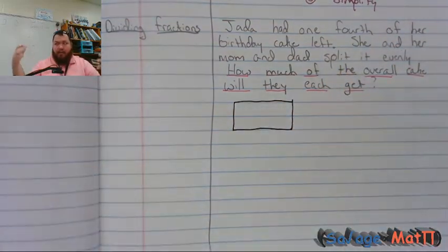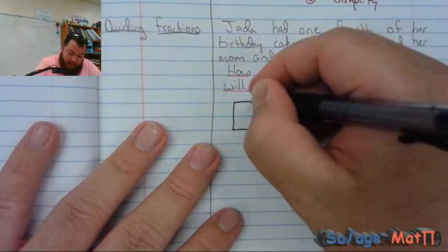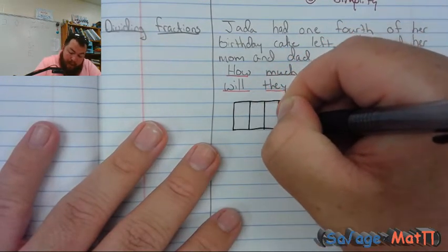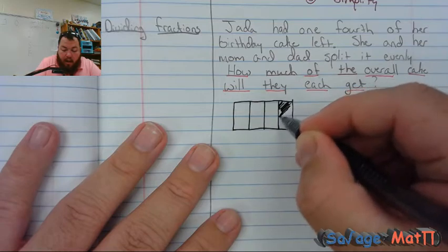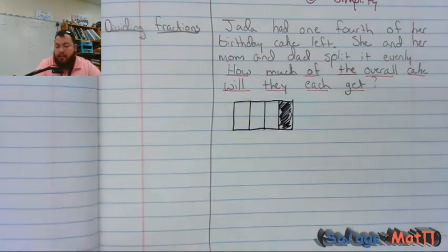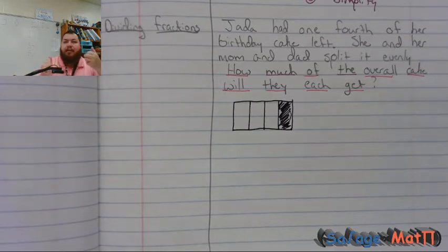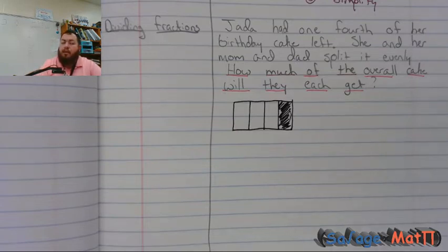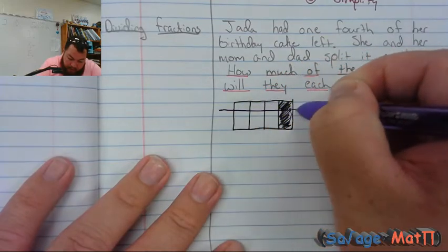I'm sure it was a Star Wars cake, because today may the fourth be with you. So I'm going to divide my cake into fourths, and I know that they have one-fourth of the cake left. I'm going to shade that in. We know Jada has one-fourth of the cake. How many ways do I need to split it up? Into threes, because Jada wants to share with her mom and her dad. So I'm going to split my overall cake up into thirds.